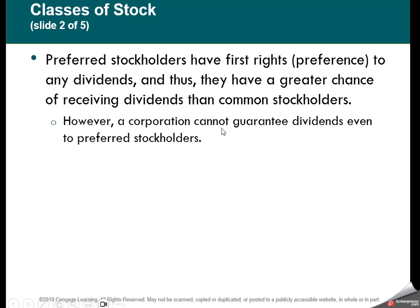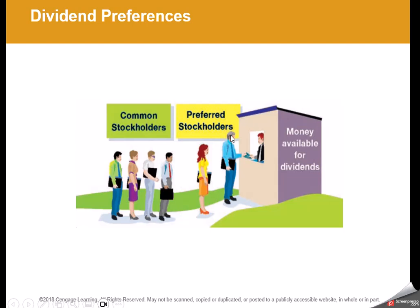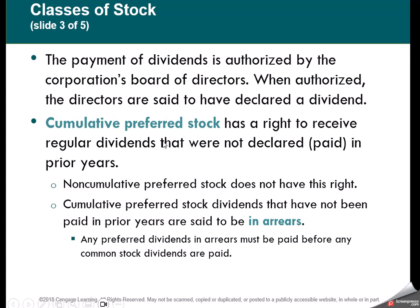There are two types of preferred stock regarding dividends: cumulative and non-cumulative. Non-cumulative preferred stock means stockholders do not have the right to any past years' unpaid dividends. If it's cumulative, whenever the company does have money, it must pay those dividends to the preferred stockholders — those are dividends in arrears. If it's non-cumulative, the preferred stockholders simply lose that money. Cumulative gets the dividends that are in arrears; non-cumulative does not.